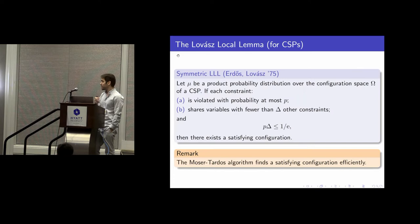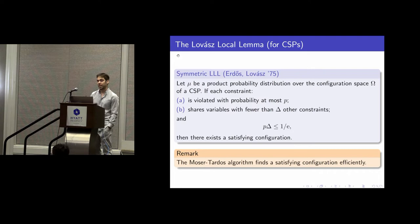Towards this goal of understanding these processes, there has been a breakthrough over the past decade, due to Moser and Tardos, who showed that a very simple process like this can actually make constructive a very powerful and deep statement in probabilistic combinatorics, which is called the Lovász Local Lemma.